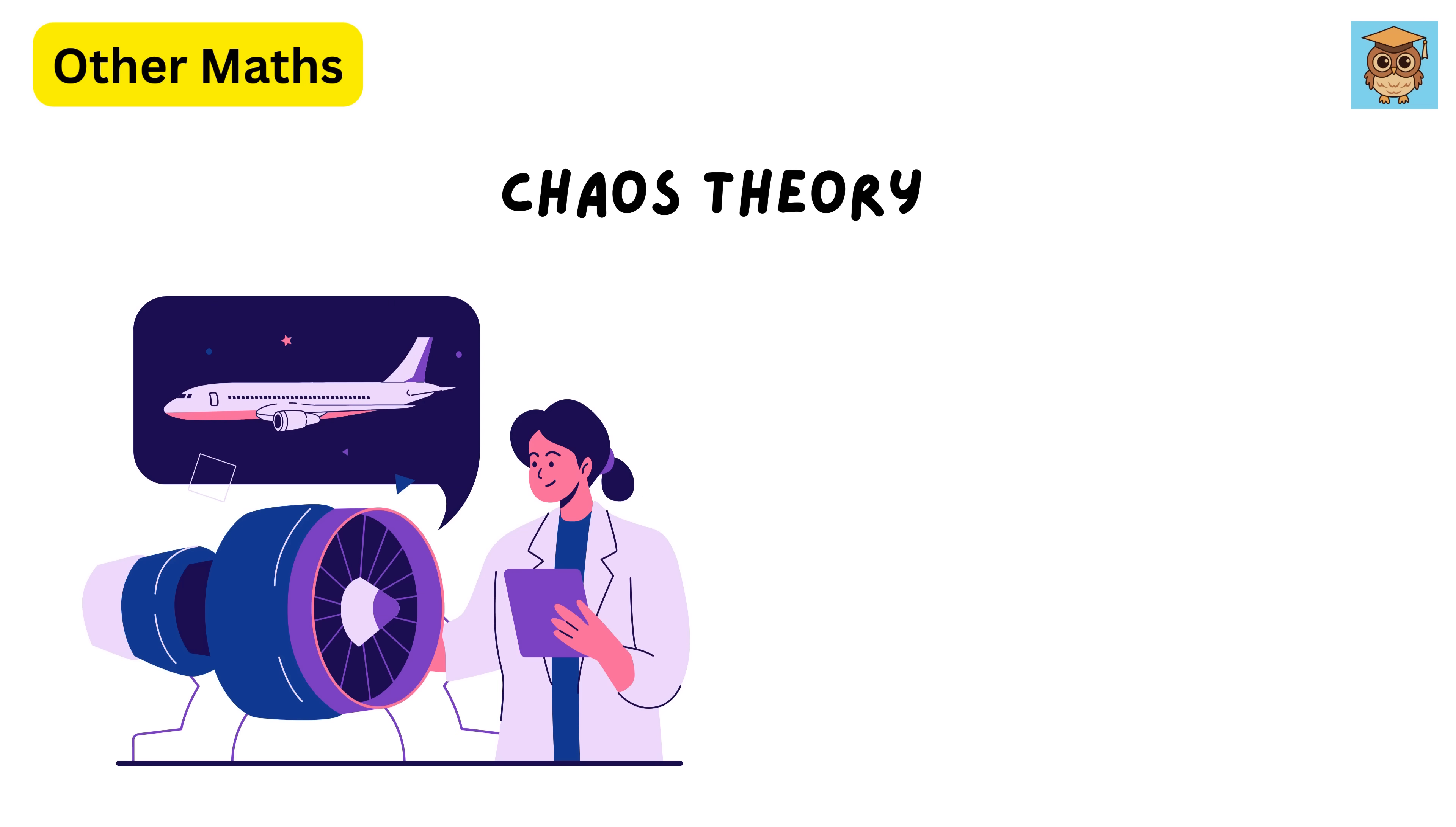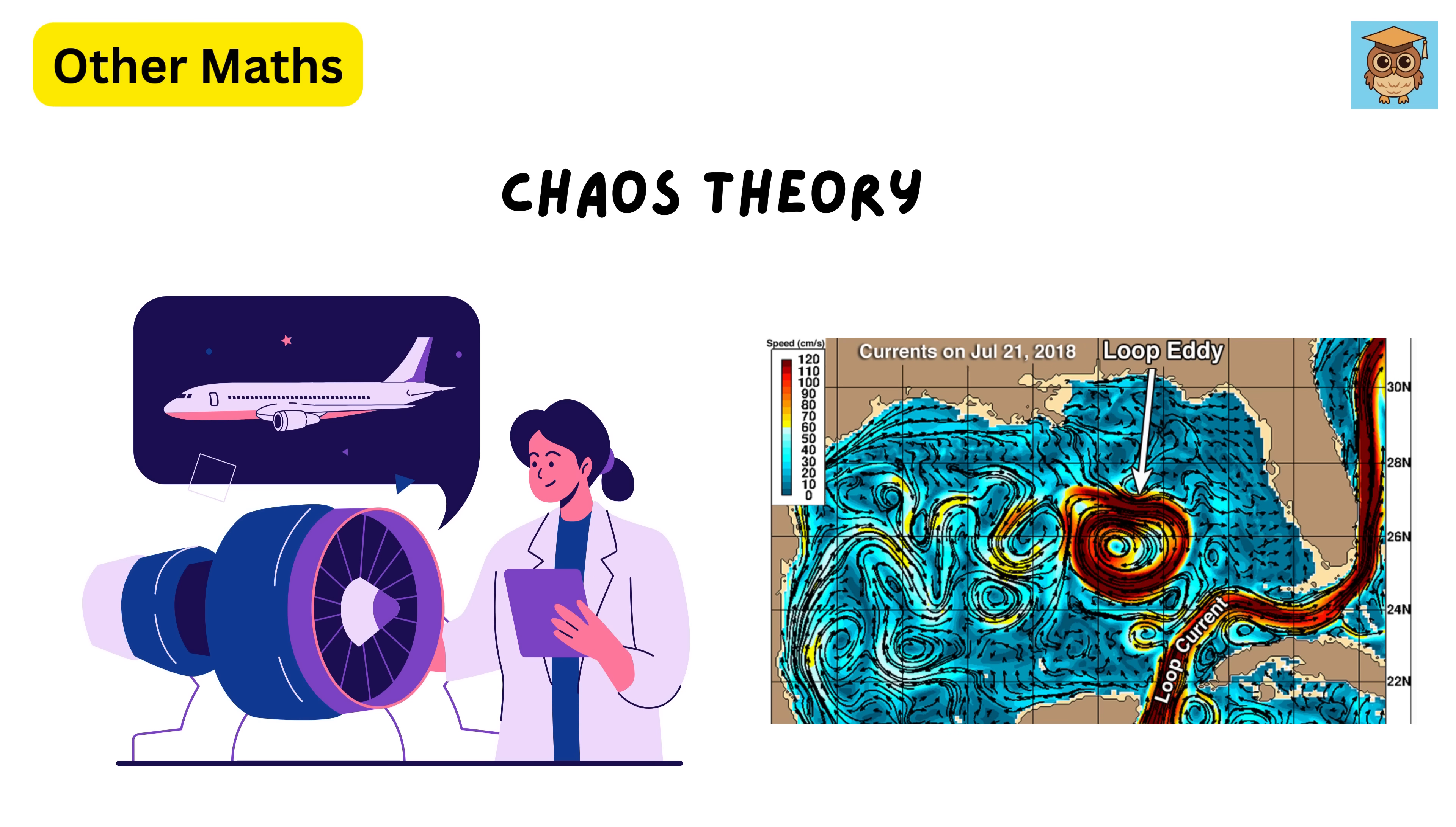Engineers and physicists apply chaos theory to improve aircraft design and understand ocean currents, such as the complex eddies in the Gulf Stream.